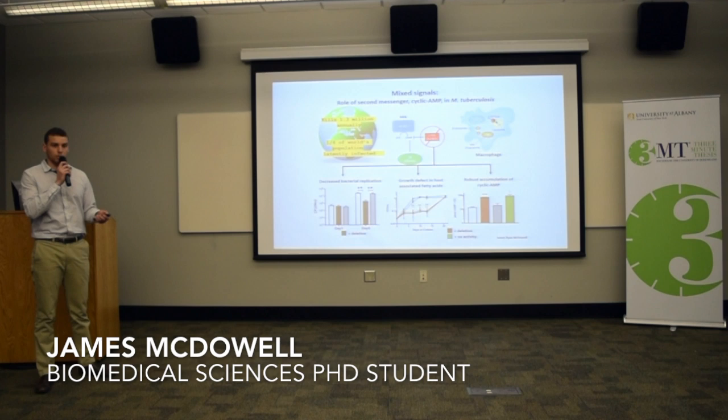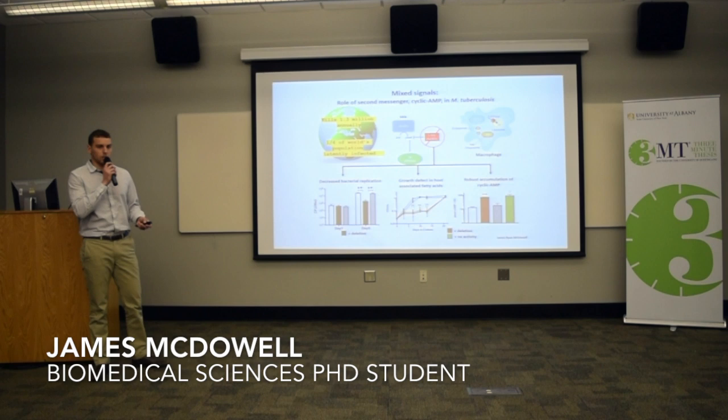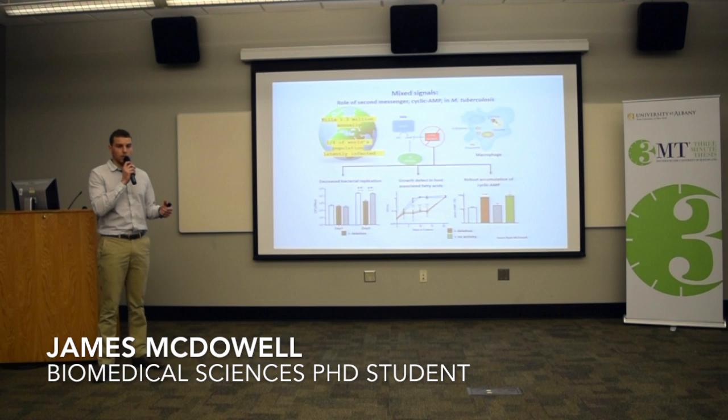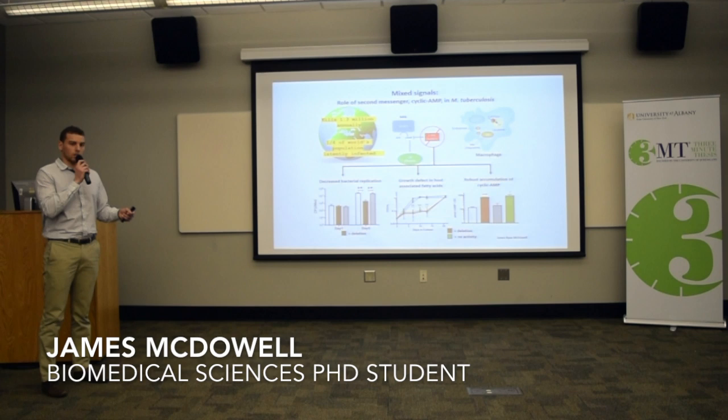One of the ways TB does this is through an enzyme called a phosphodiesterase. This enzyme is believed to degrade cyclic AMP in order to regulate cyclic AMP's localization in the cell — so where it is, how much cyclic AMP is present, and also how long the cyclic AMP persists.